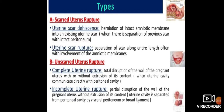Complete uterine rupture is a total disruption of the wall of the pregnant uterus with or without extrusion of its contents, where the uterine cavity communicates directly with the peritoneal cavity. Incomplete rupture is a partial disruption of the wall of the pregnant uterus without extrusion of its contents; the uterine cavity is separated from the peritoneal cavity by the visceral peritoneum or broad ligament.